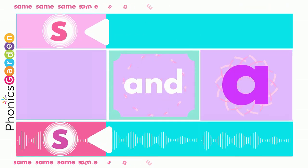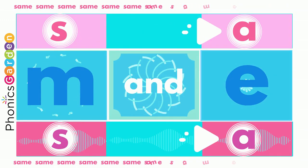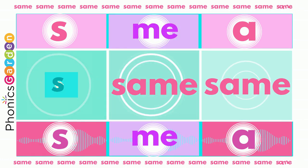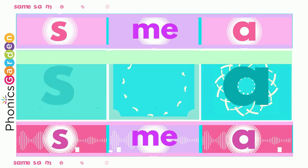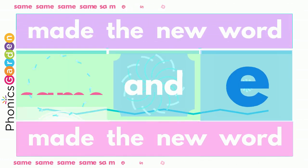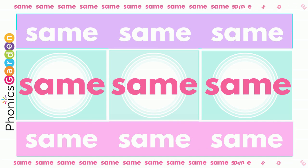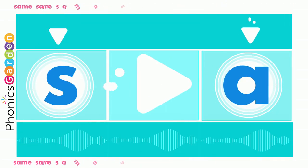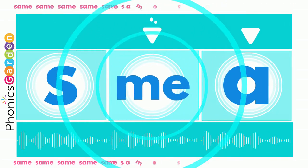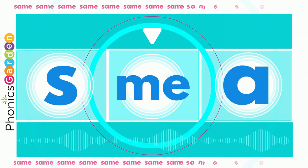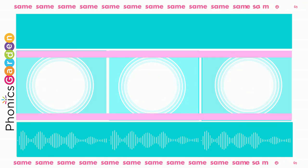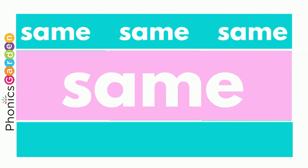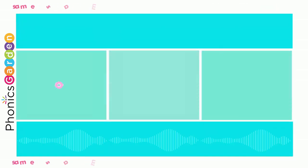S-A-M-E, same, same, same. Use the S, use the A, end it with M-E. Now you've made the new word, same for me.